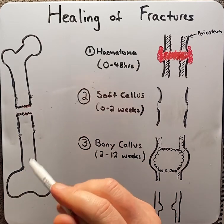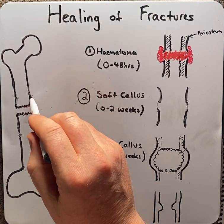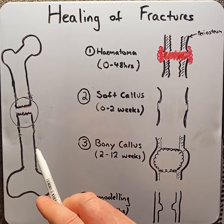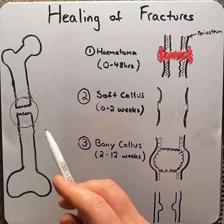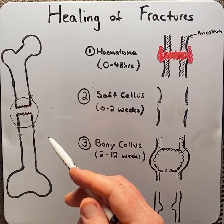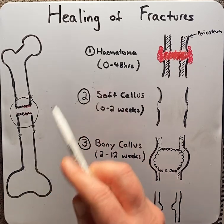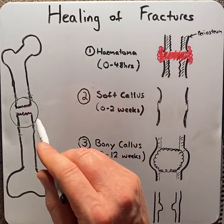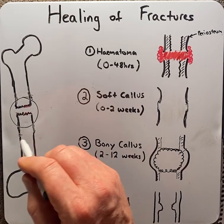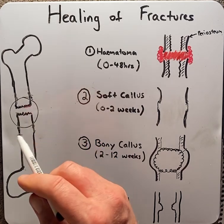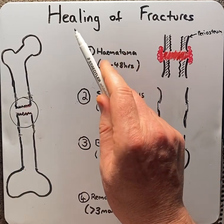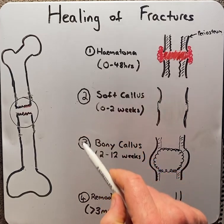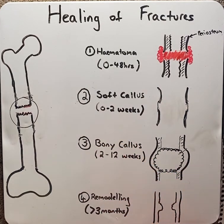A fracture is defined as a loss of integrity in a bone, which is usually the result of mechanical trauma. Bone healing intends to restore the continuity of the bone once a fracture has occurred. Bone healing occurs in four stages.